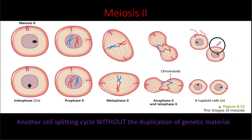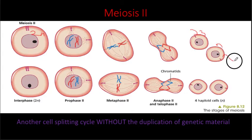We label the gametes as N and the original cell as 2N. This could represent either an egg or a sperm. When the sperm fertilizes the egg — 23 plus 23 — you return to your desired 46 chromosomes that you need in order to survive.